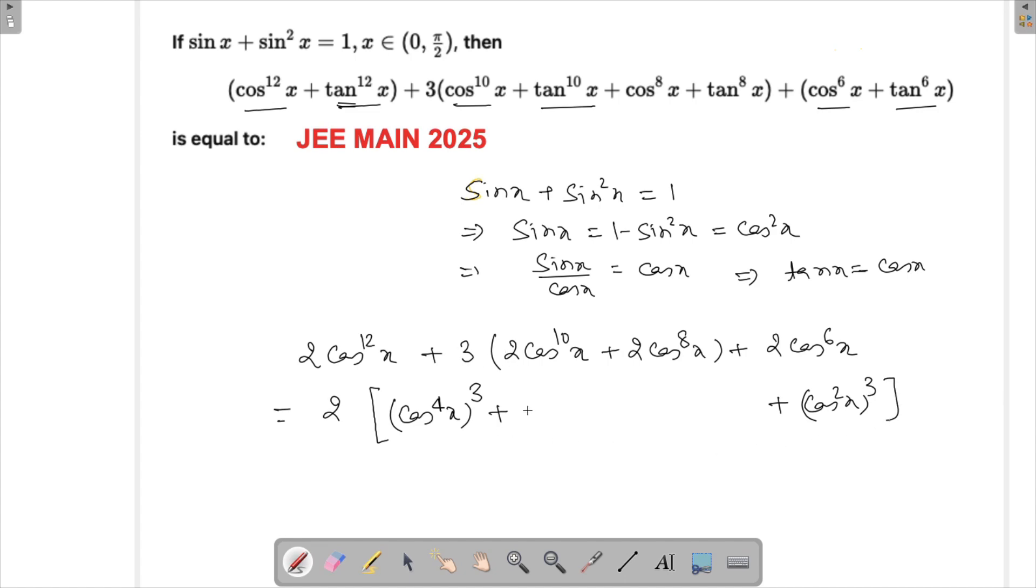Now let's try writing this as three times cos raised to the power 4x into cos square x, cos raised to the power 4x plus cos square x. So this will become cos raised to the power 6x into cos raised to the power 4x is cos raised to the power 10x, and cos raised to the power 6x into cos raised to the power 2x would be cos raised to the power 8x.